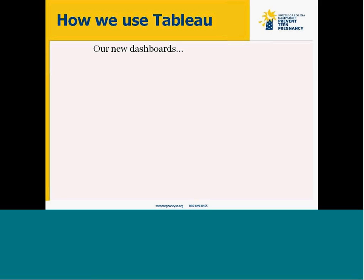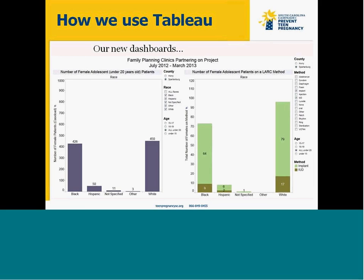How we use Tableau now and what our new dashboards look like — we've recreated these dashboards with the same data, but they have a much different feel and look in Tableau. Here you can see we have the caseload data on the left: female adolescent patients under 20 years old, broken out by race across the bottom. On the right, we have the contraceptive methods, and we've pulled out two particular methods — these long-acting reversible contraceptive methods. These are those highly reliable methods at the bottom of the continuum, which is our ultimate goal with moving teens towards.